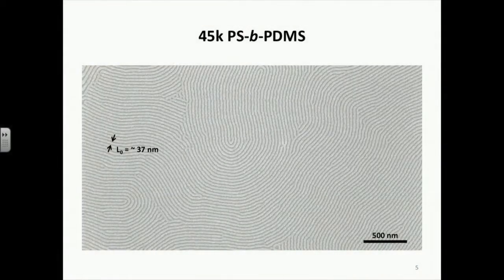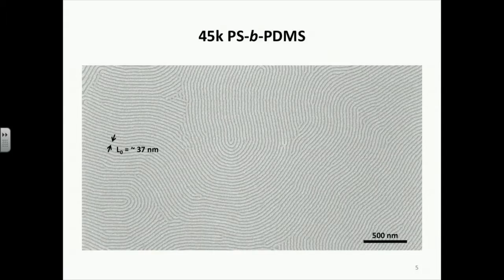For the experiment, we used 45 kg/mol cylindrical morphology PS-PDMS block copolymer. We solvent annealed the block copolymer film in a vapor atmosphere for five hours using a 5-to-1 mixture of toluene and heptane. The equilibrium periodicity L0 was about 37 nanometers ± 2 nanometers.